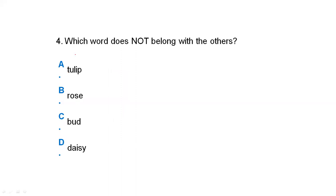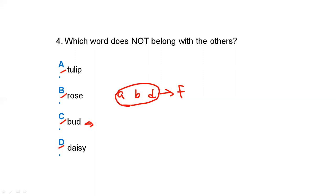The next question: which word does not belong? Option A, option B (rose), option D — all are flowers, and option C is a part of a plant. So options A, B, and D are in the same category, and option C is different. Therefore our correct answer is option C.